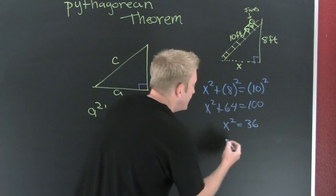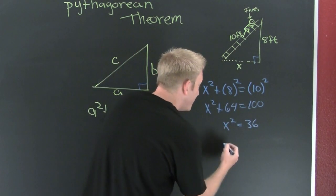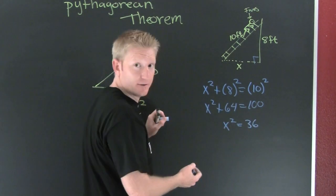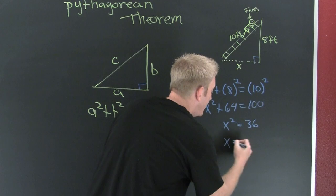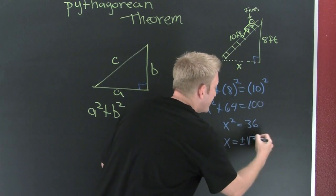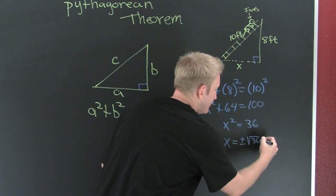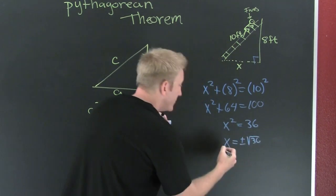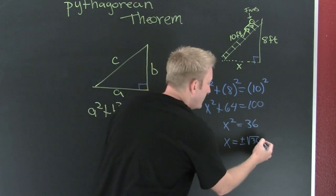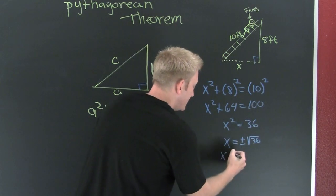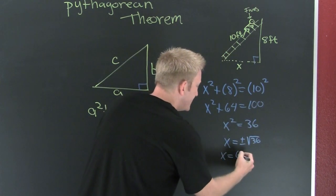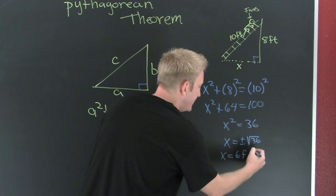Then I take the square root of both sides, and I'm not going to forget that it's plus or minus — so x is 6 feet.